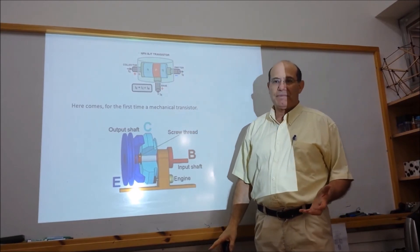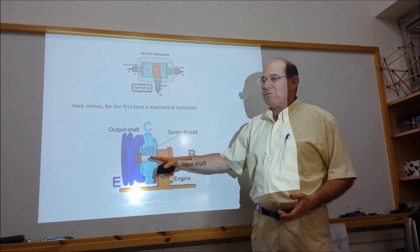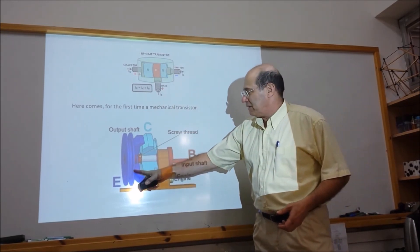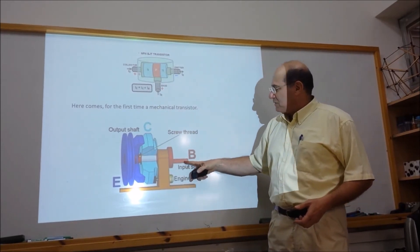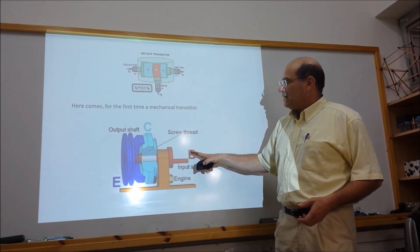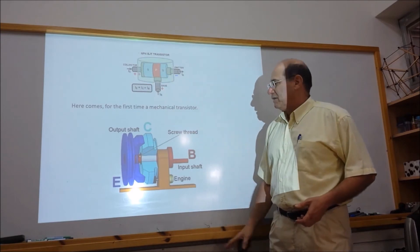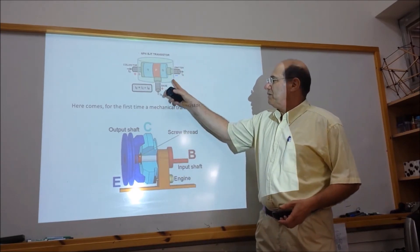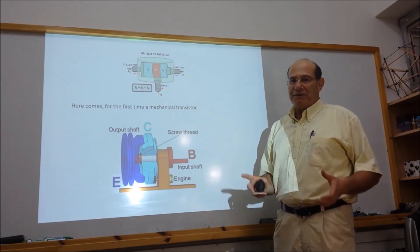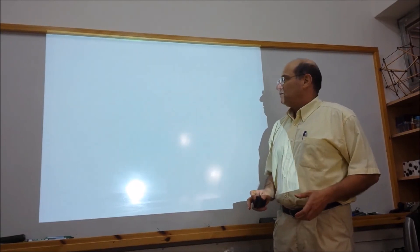Now the behavior is the same. The input velocity is almost the same as the output velocity, the rotation of the emitter. Now the force in the input shaft, in the base, is multiplied by beta and we derive the force outside in the emitter. So doing the transformation we derive a device that is equivalent or isomorphic to the device in electronics.